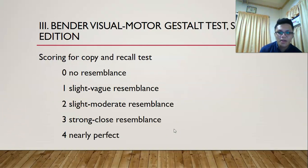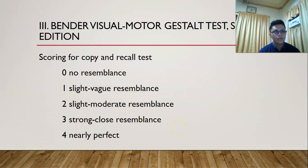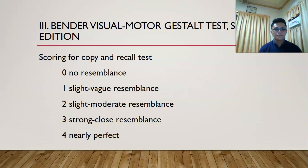Scoring for the copy and recall test involves numbers from 0 to 4, with 0 being no resemblance at all and 4 being nearly perfect resemblance. The scores are then totaled, with higher scores indicating better performance. For clients below 8 years old, the range is 0 to 52; for clients 8 years old and up, the range is 0 to 48. Raw scores are then converted to standard scores using age reference tables at the back of the manual.